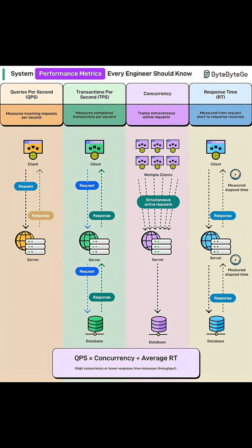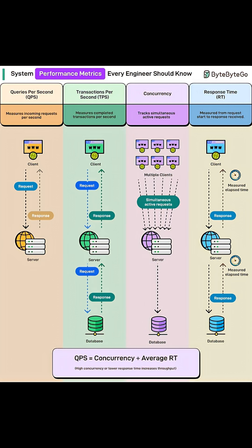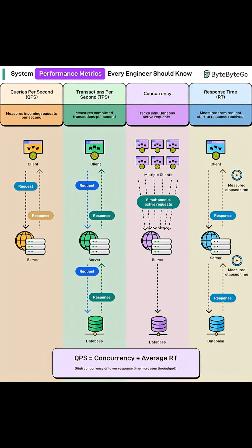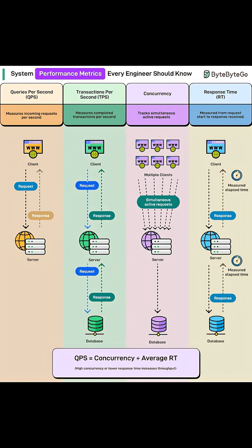Next, transactions per second, or TPS. Unlike QPS, TPS measures completed transactions, from request to database response. It tells you how well your system handles full cycles of work.